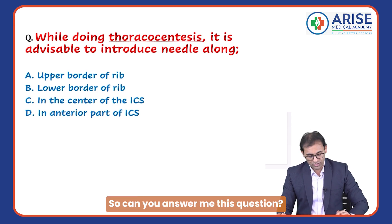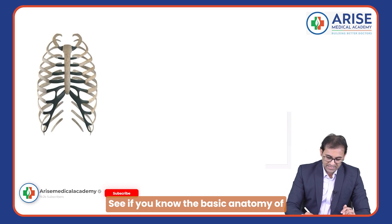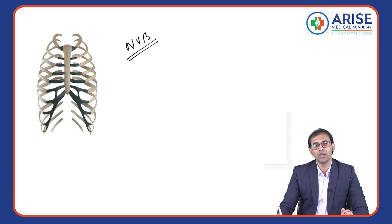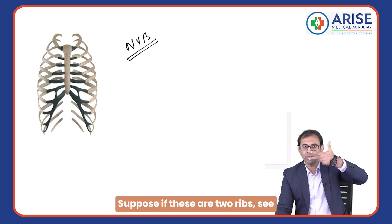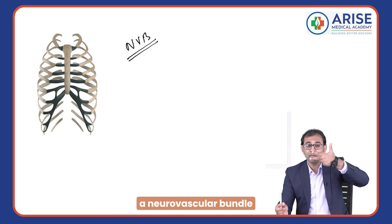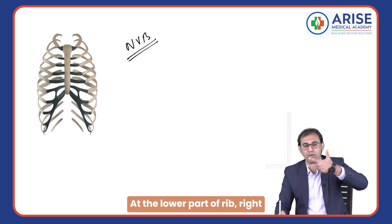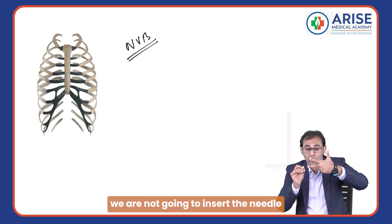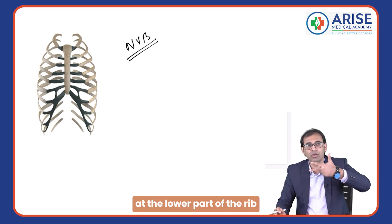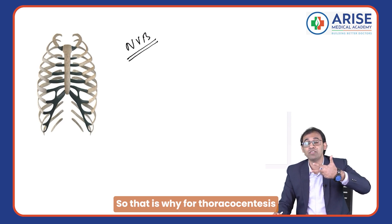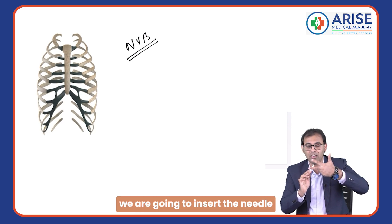If you know the basic anatomy of the neurovascular bundle in the thoracic cage: suppose these are two ribs — the neurovascular bundle lies at the lower part of the rib. So for thoracocentesis, we are not going to insert the needle at the lower part of the rib, because we can damage the neurovascular bundle.